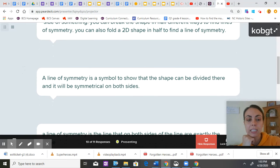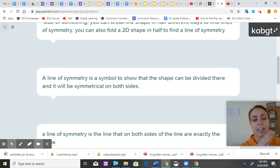We talked about that word symbol. A line of symmetry is a symbol to show that the shape can be divided and it will be symmetrical on both sides.